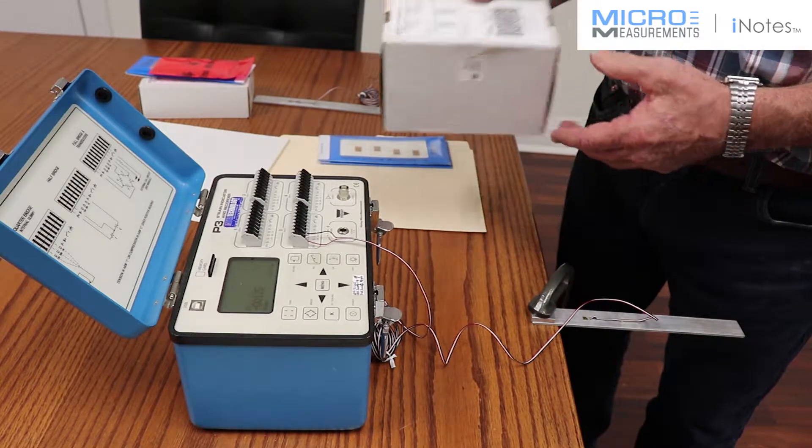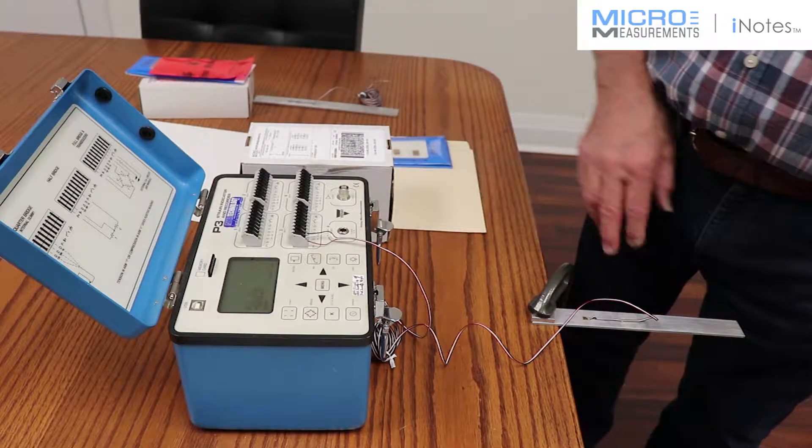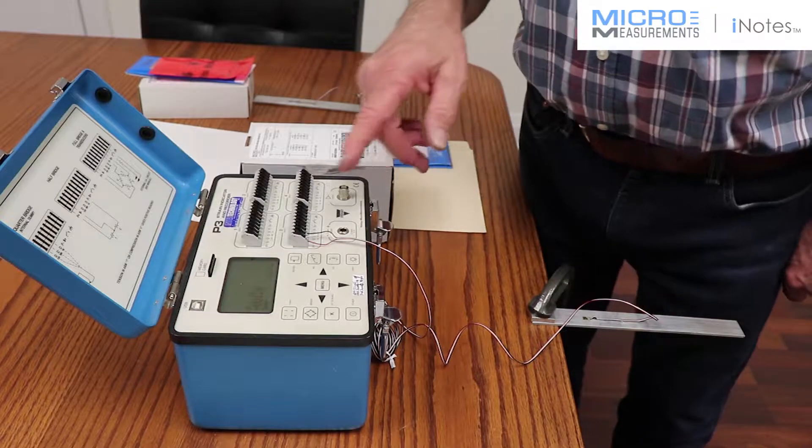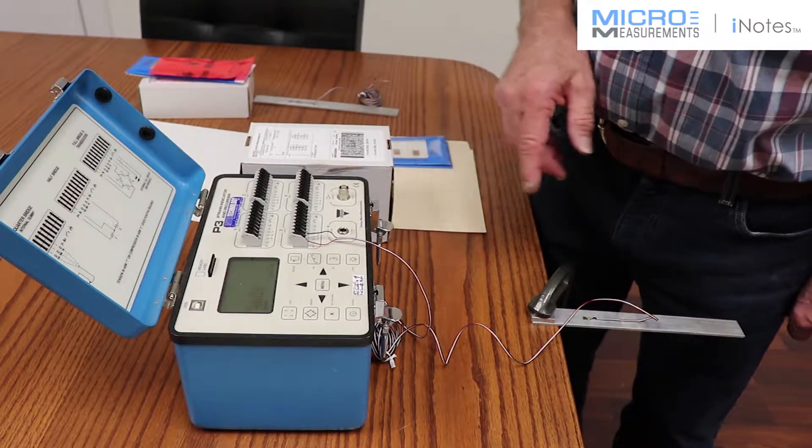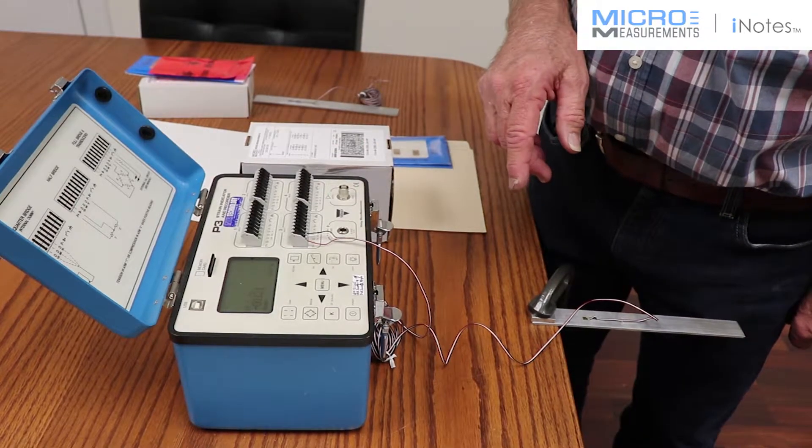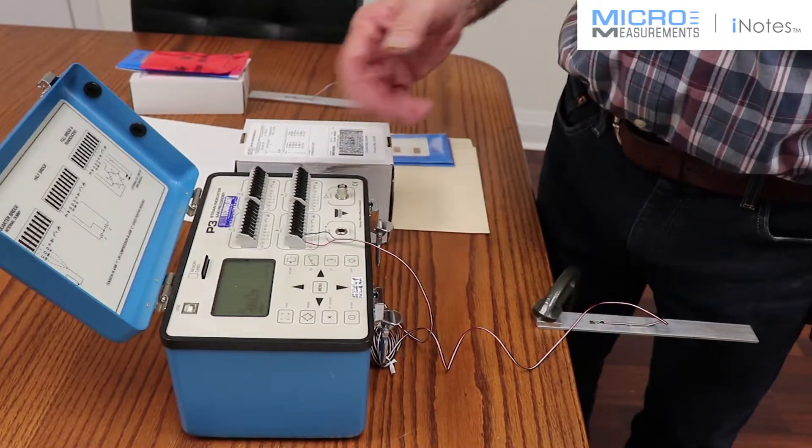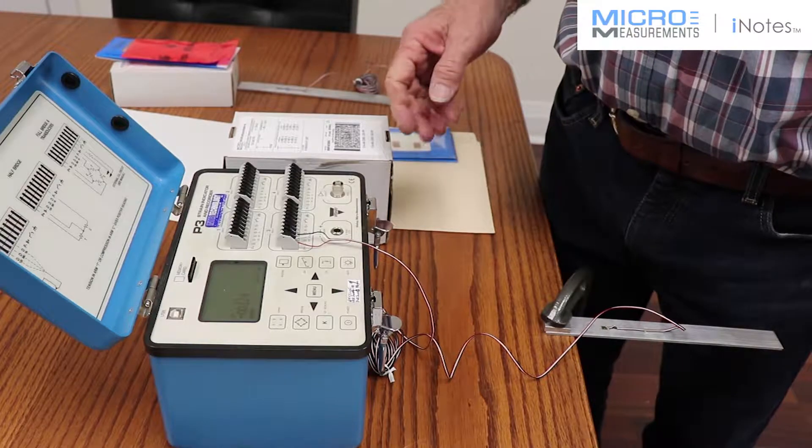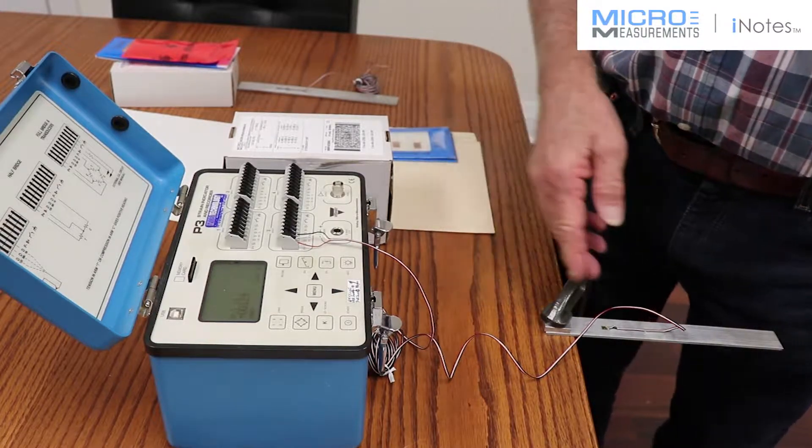We've installed the lead wires on a beam and connected it to the P3 strain indicator recorder, which is a portable four-channel recorder. What I want to show you is the setup that we've attached.